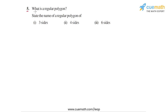Question 5 asks: what is a regular polygon, and then states the name of a regular polygon of three sides, four sides, and six sides. So what is a regular polygon? Well, a regular polygon is any polygon with equal sides and equal angles. So let's write this definition first.